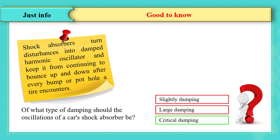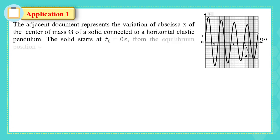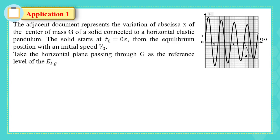Let's solve this application. The adjacent document represents the variation of abscissa x of center of mass g of a solid connected to a horizontal elastic pendulum. The solid starts at t0 equals to 0 seconds from the equilibrium position with an initial speed v0. Take the horizontal plane passing through g as the reference level of the gravitational potential energy.